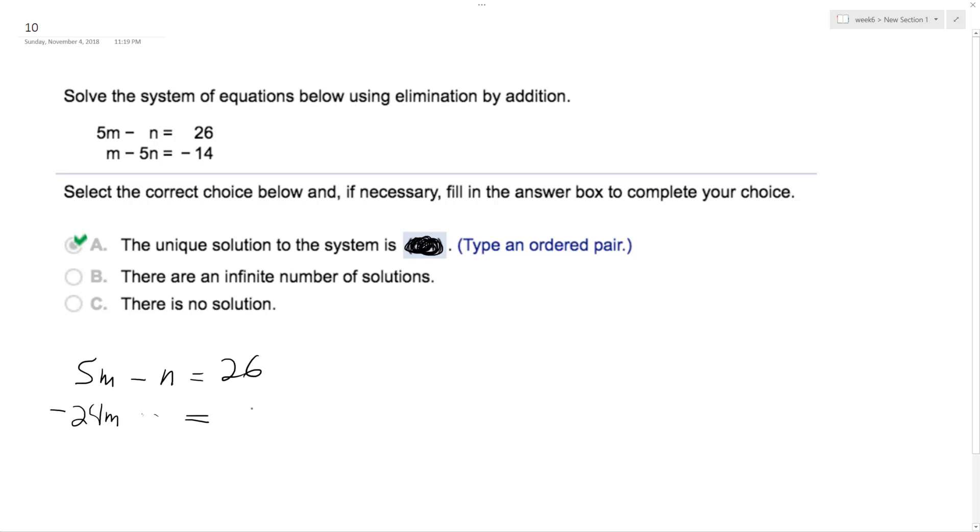Is it 130? Yeah, that's right. So I can solve for m right here. Divide by negative 24, I end up with m equals 7.